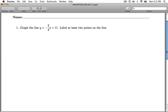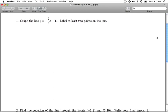Hi folks, this is Beginning Algebra Quiz 8. Number 1, we're asked to graph the line y equals negative 2 thirds x plus 11 and label at least two points on the line.